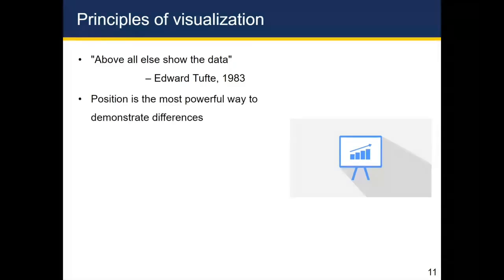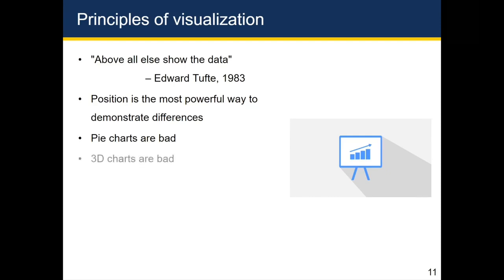When deciding how you want to put your visualization together, another takeaway is to recognize that position is the most powerful way to demonstrate differences. Things that are spatially apart in a graph are going to be the most readily distinguishable to someone looking at that graph. A couple other takeaways: pie charts generally are bad and you should try to avoid them, and 3D charts are even worse.